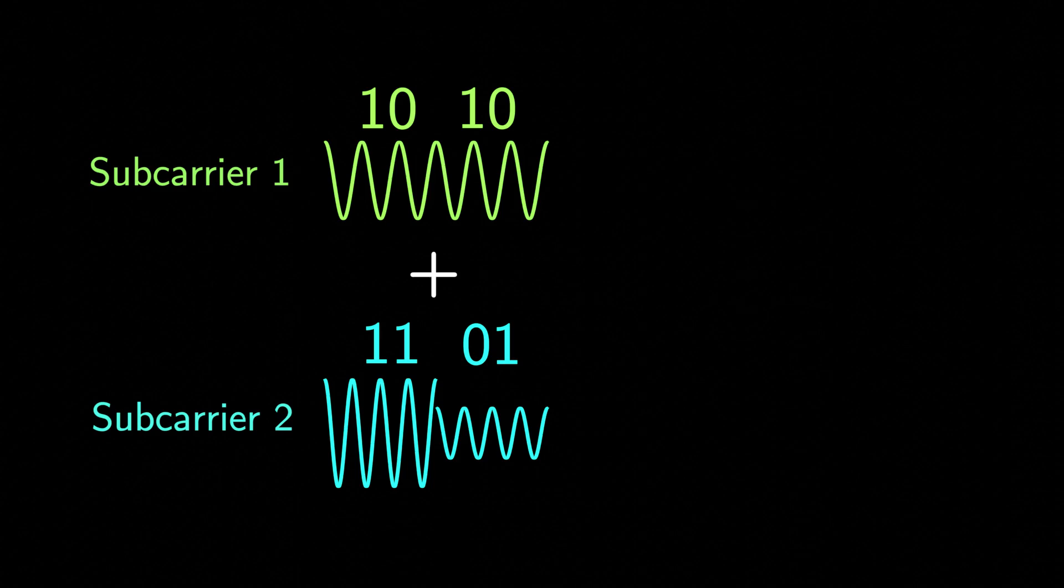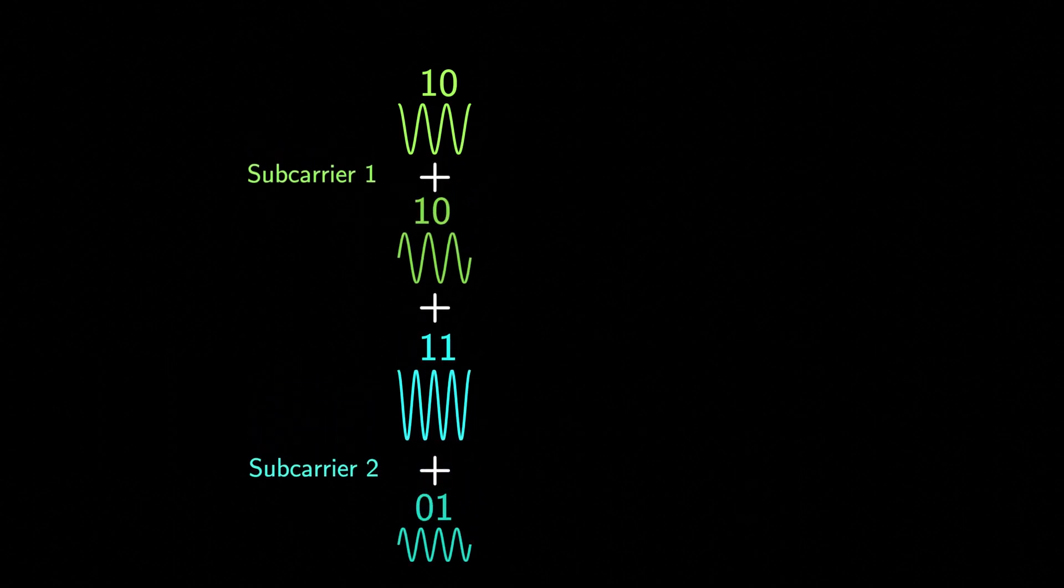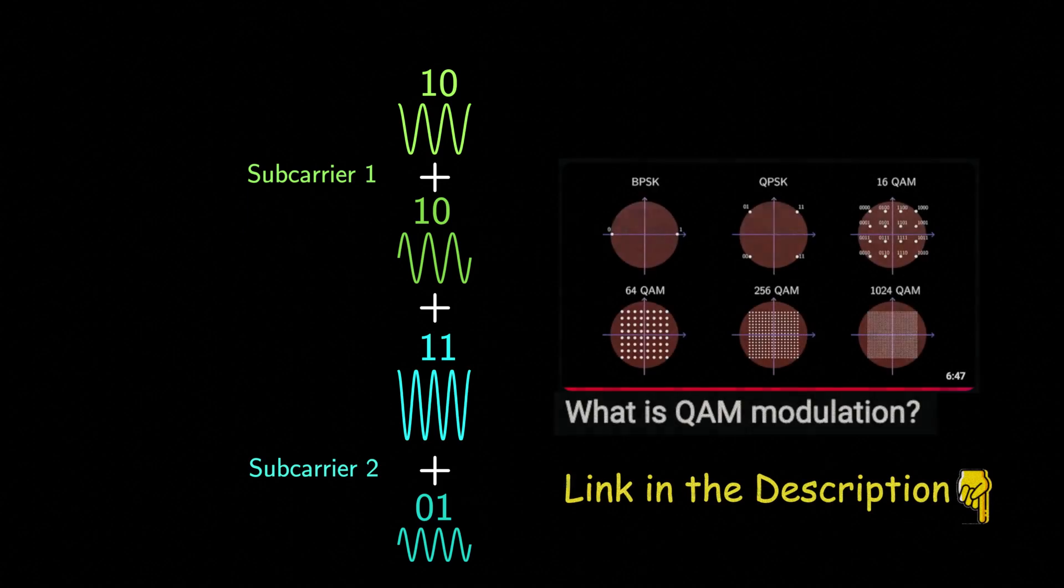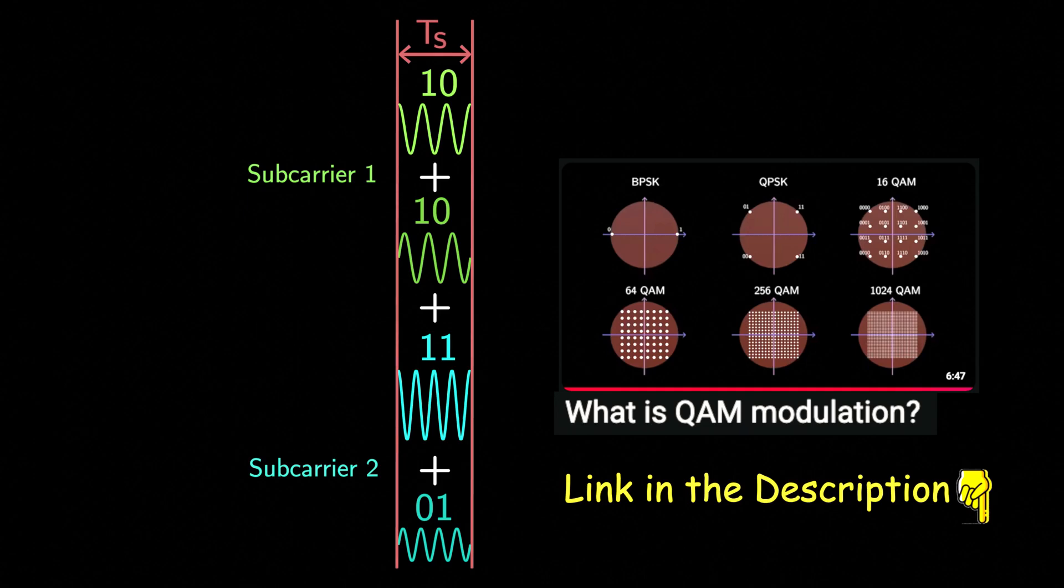OFDM gets even smarter. For each subcarrier, OFDM actually uses both cos wave and sine wave to carry data independently, further reducing the transmission time. This means we can pack more information into a shorter time duration. This technique is known as QAM modulation. As I have already explained in my earlier video, see that the transmission duration is reduced to one-fourth in this example, compared to our previous method.